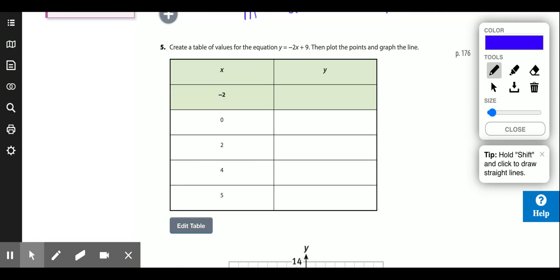If you need to create a table of values for this, well, you just plug in different numbers for x. If x is negative 2, then that's negative 2 times negative 2, which is 4. 4 plus 9 is 13. 0 times x is 0, plus 9 is 9. That's where you get the y-intercept from. When x is 0, y is 9. 2 times negative 2 is negative 4, plus 9 is 5. 4 times negative 2 is negative 8, plus 9 is 1. 5 times negative 2 is negative 10, plus 9 is negative 1.